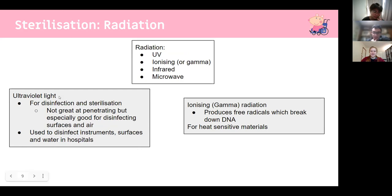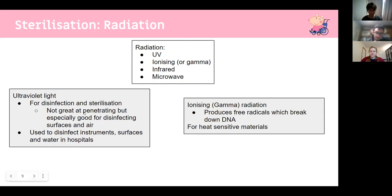Sterilization can also occur through radiation. UV light can disinfect or sterilize but is particularly used for disinfecting instrument surfaces and water in hospitals, as it doesn't penetrate well. Ionizing gamma radiation is stronger and more useful for sterilization — it produces free radicals that break down DNA, and is used for heat-sensitive materials. The priority order is: moist heat first, then dry heat, then radiation.